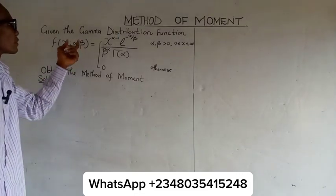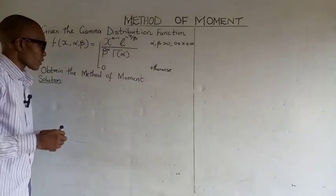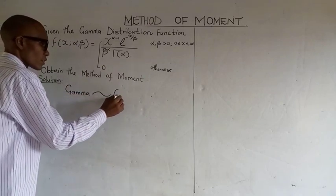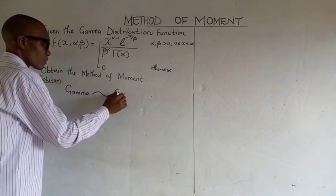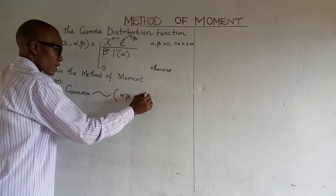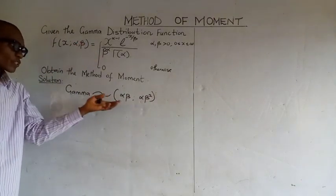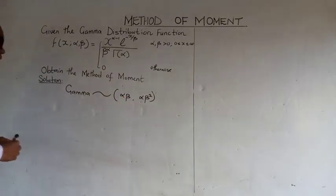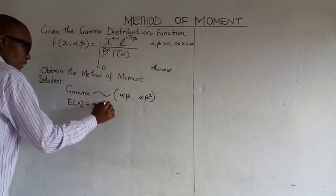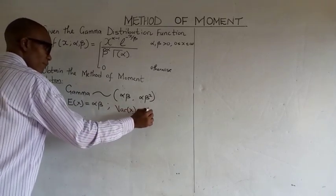How to obtain the method of moments for the gamma distribution function. If we recall that our gamma function follows the distribution where the mean is alpha beta and the variance is alpha beta squared. We are only concerned with the fact that our expected value is equal to alpha beta and the variance of x is equal to alpha beta squared.